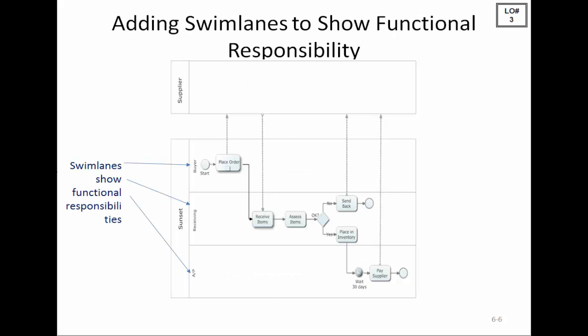Finally, we'll look at another alternative. Now we have three functions within Sunset. The supplier is in a separate pool but none of the supplier's activities are modeled, so the message flows connect to the outside edge of the supplier pool.